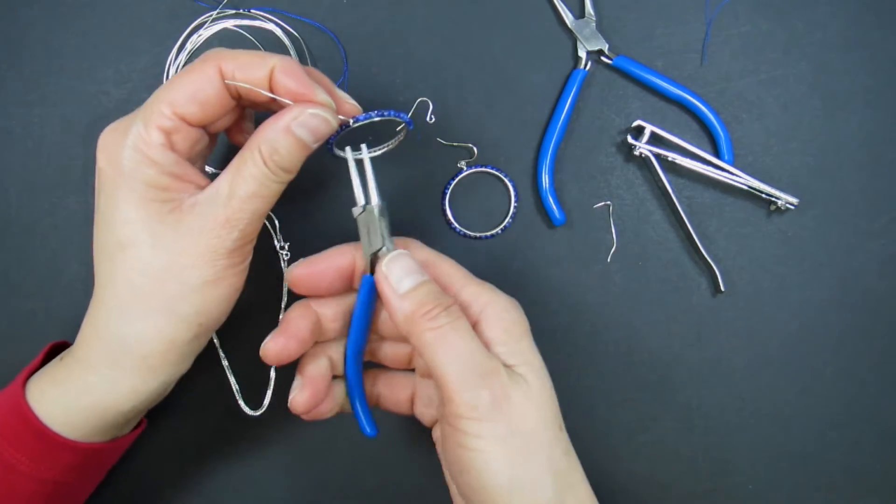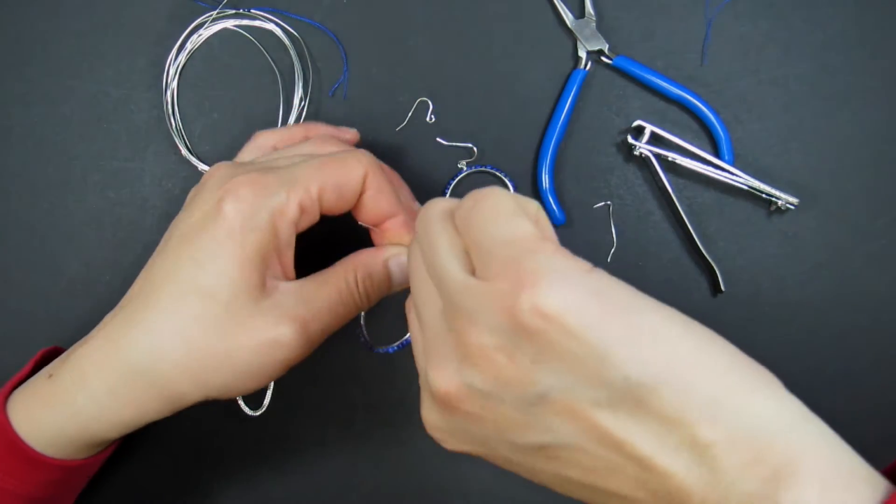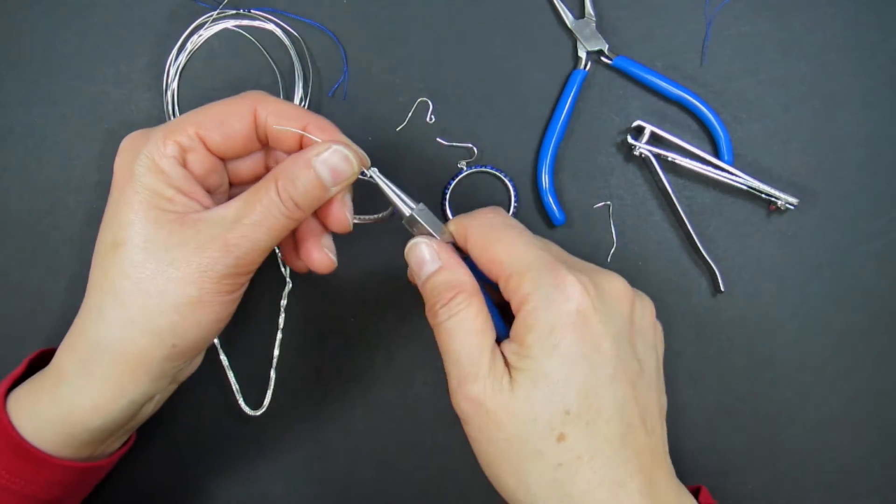To finish, form a loop with your round nose pliers and wrap the wire around itself one and a half times.